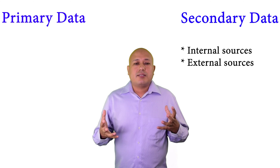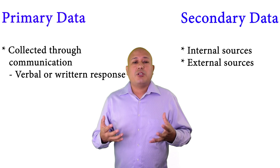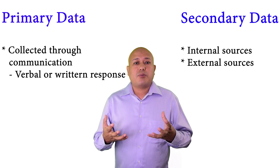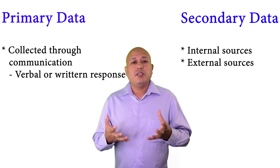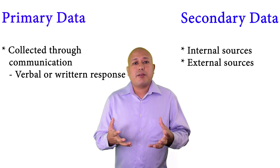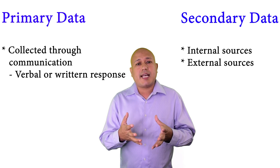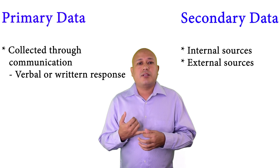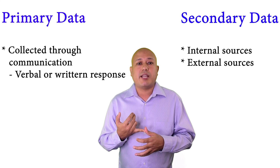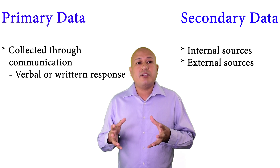The first source of primary data is communication — where you communicate directly with the consumer or target person to get information. If you're facing a marketing problem, you might want to communicate with consumers to find out their needs and wants, the price they're willing to pay, or what features they want in a new product. This includes surveys, phone interviews, in-person interviews, and focus groups.